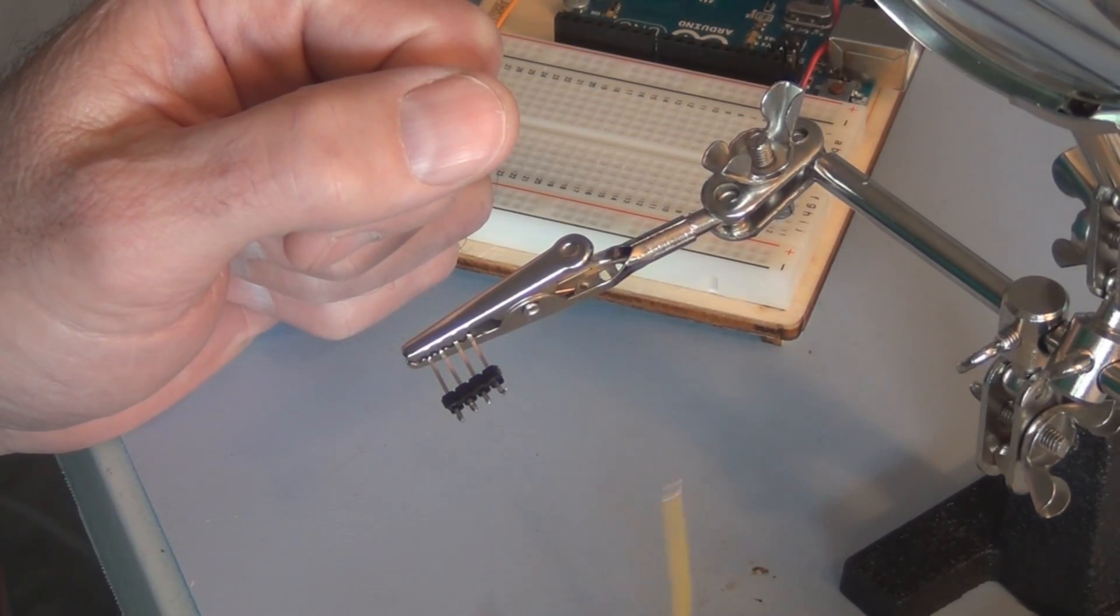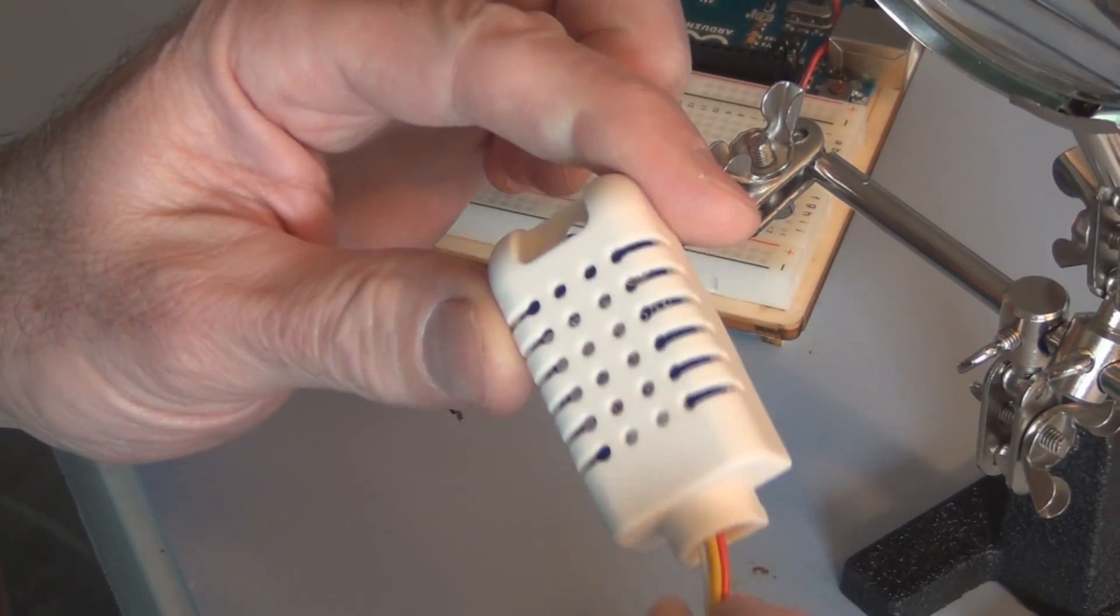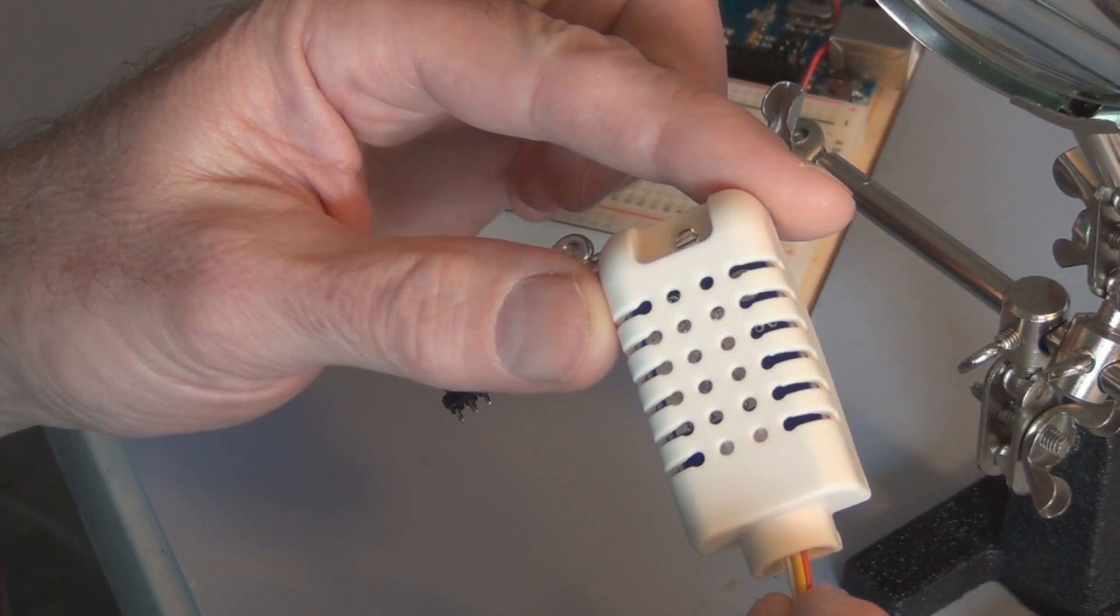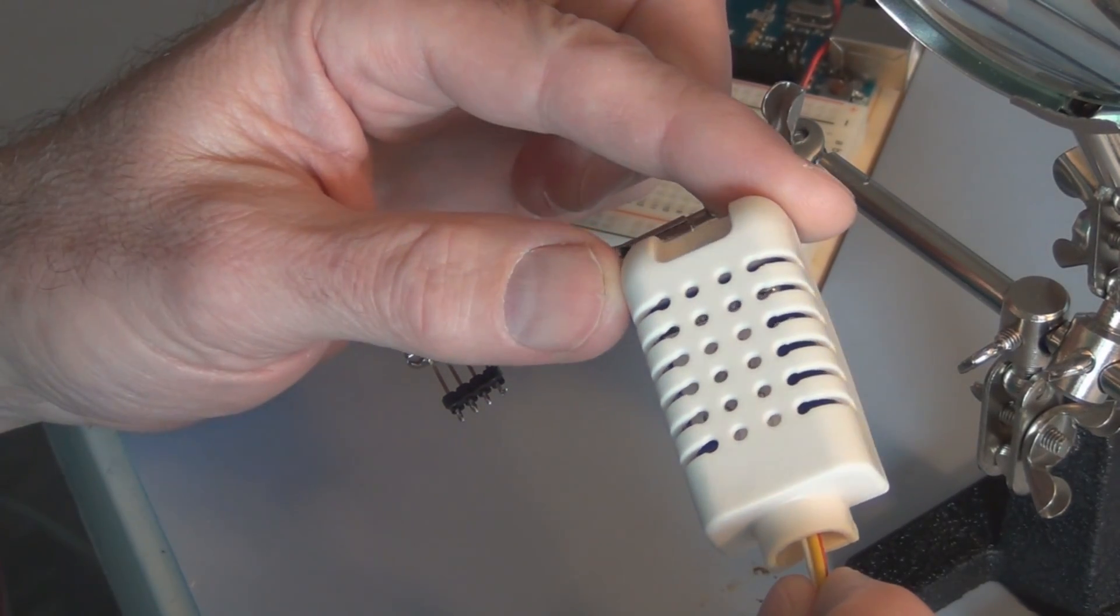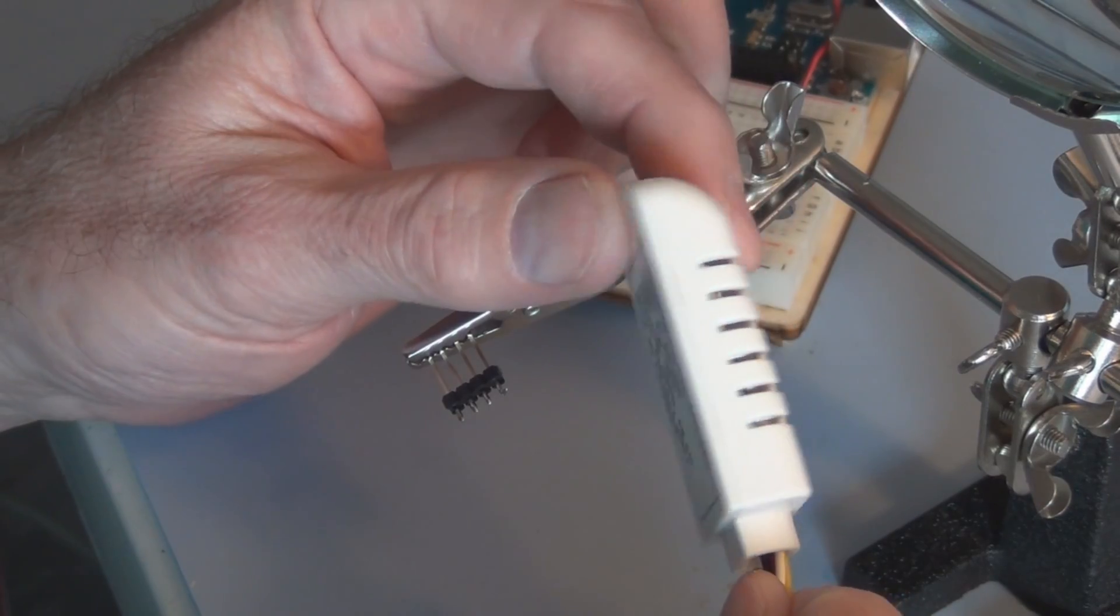Hi everyone and welcome to my channel. This is a DHT22. It's both a temperature and a humidity sensor in one package.